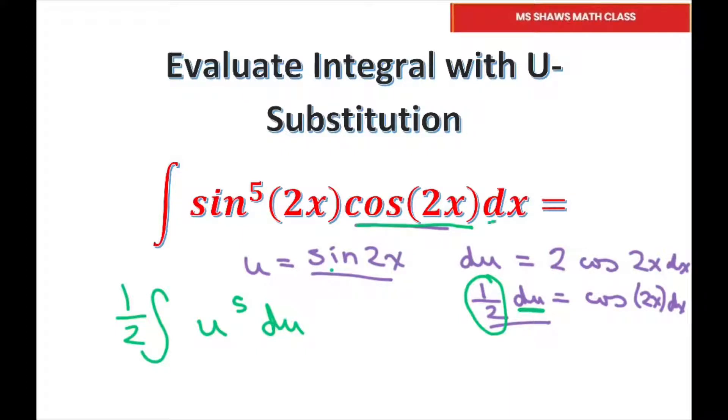So what I'm doing is substituting each of these pieces. This piece goes together here. Now let's write it again. So we have 1 half integral of u to the 5th du.